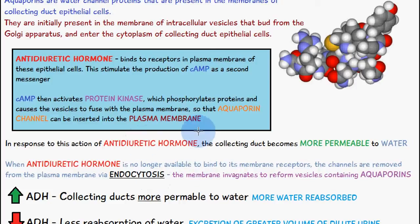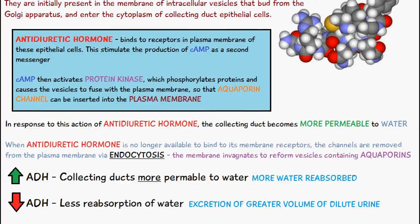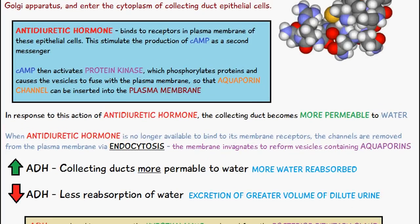In response to the action of ADH, the collecting duct becomes more permeable to water, so water can be removed from the collecting duct into the surrounding interstitial fluid. When ADH is no longer available to bind to its membrane receptors, the channels are removed from the plasma membrane via endocytosis.